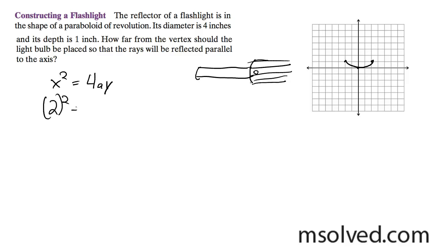So that means you plug in 2 for x and you plug in 1 for y. So times 1, you just get 4a. Divide it through and you get a is equal to 1. That means that the bulb is going to be located 1 inch from the vertex.